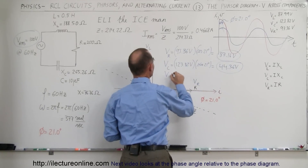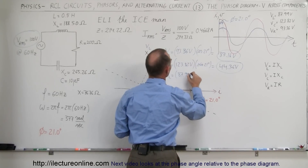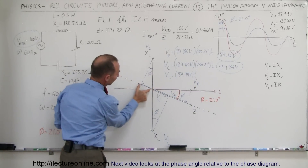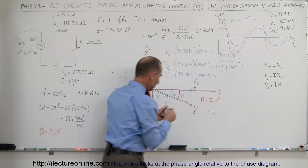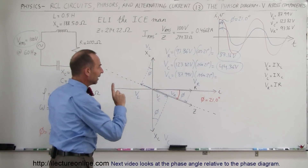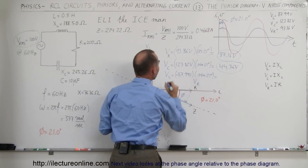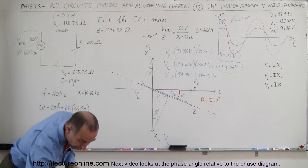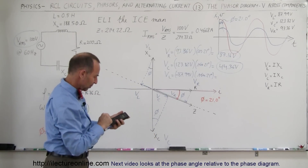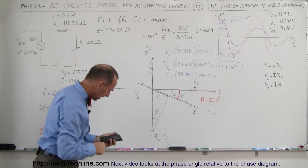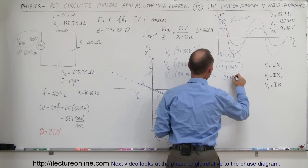Finally, the voltage across the inductor equals its RMS voltage of 87.99 volts, and again it's the opposite side to the angle, so it's the sine of 21 degrees. But we have to be careful — it's going to be a negative value because it's pointing to the left, so we put a negative sign there. Calculating: 87.99 times sine of 21 degrees gives us negative 31.53 volts.